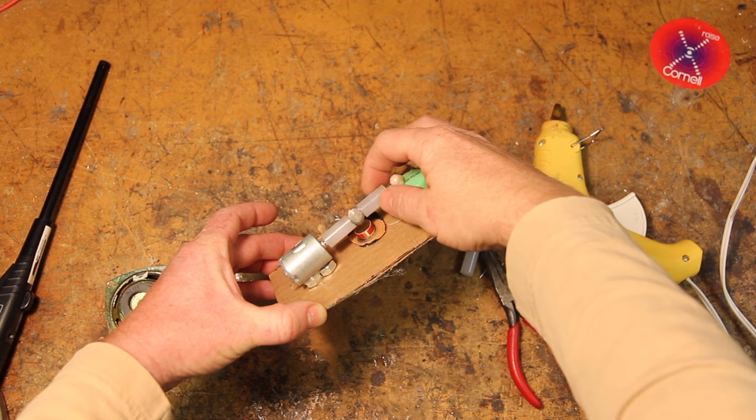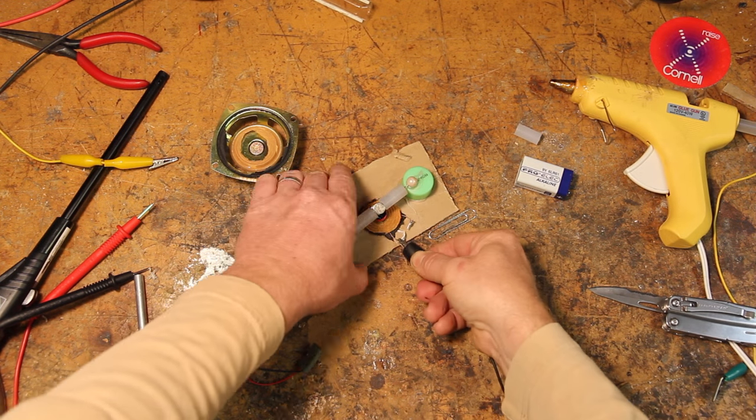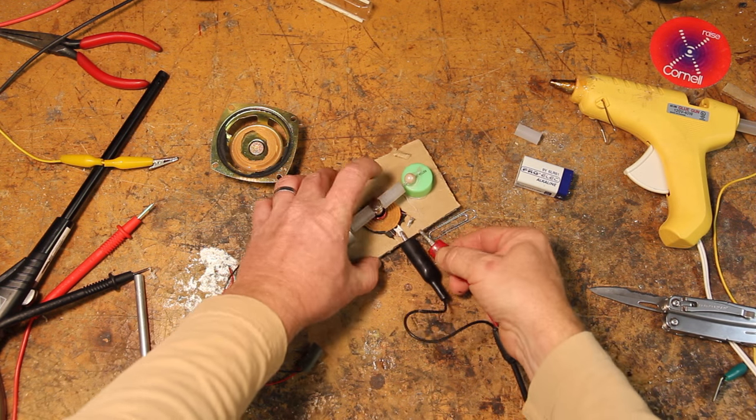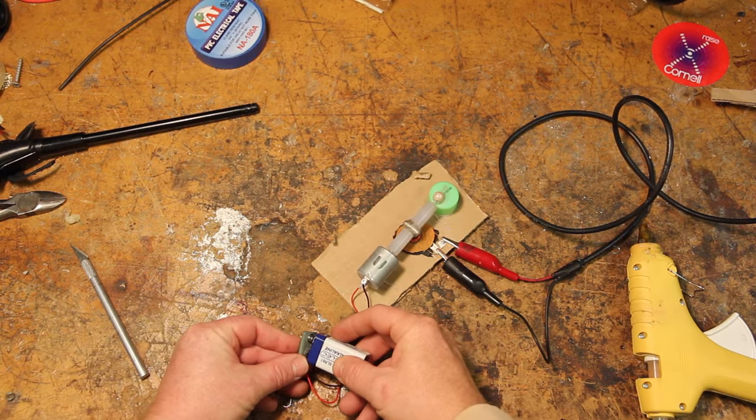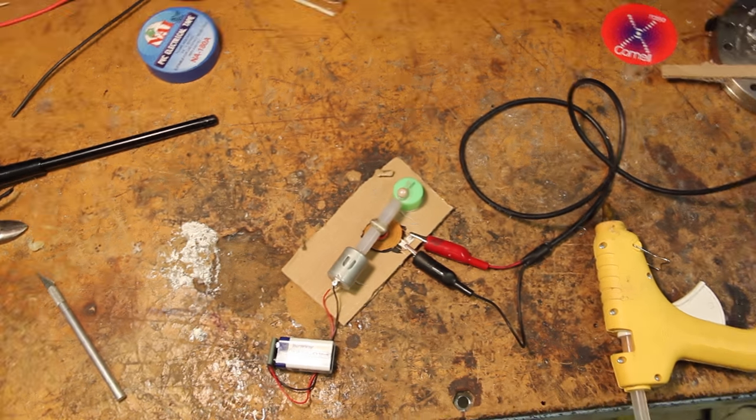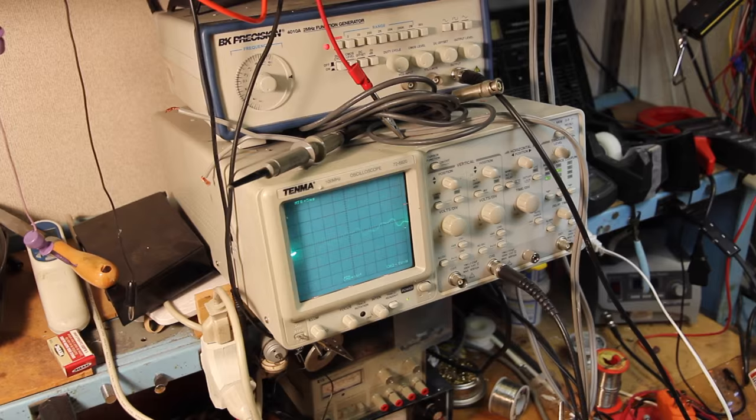I'm going to hook up some clips to our coil so that we can look at the waveform this creates on an oscilloscope. And we're of course going to have to hook a battery up to our motor to get it spinning. Looks like we've got our waveform.